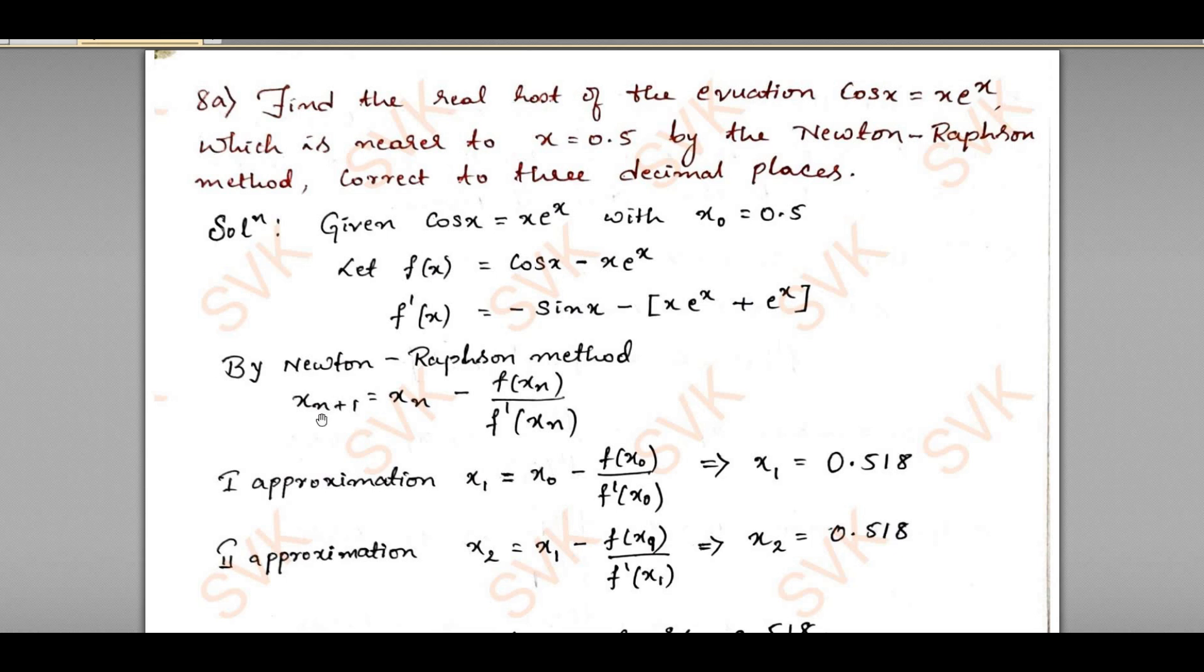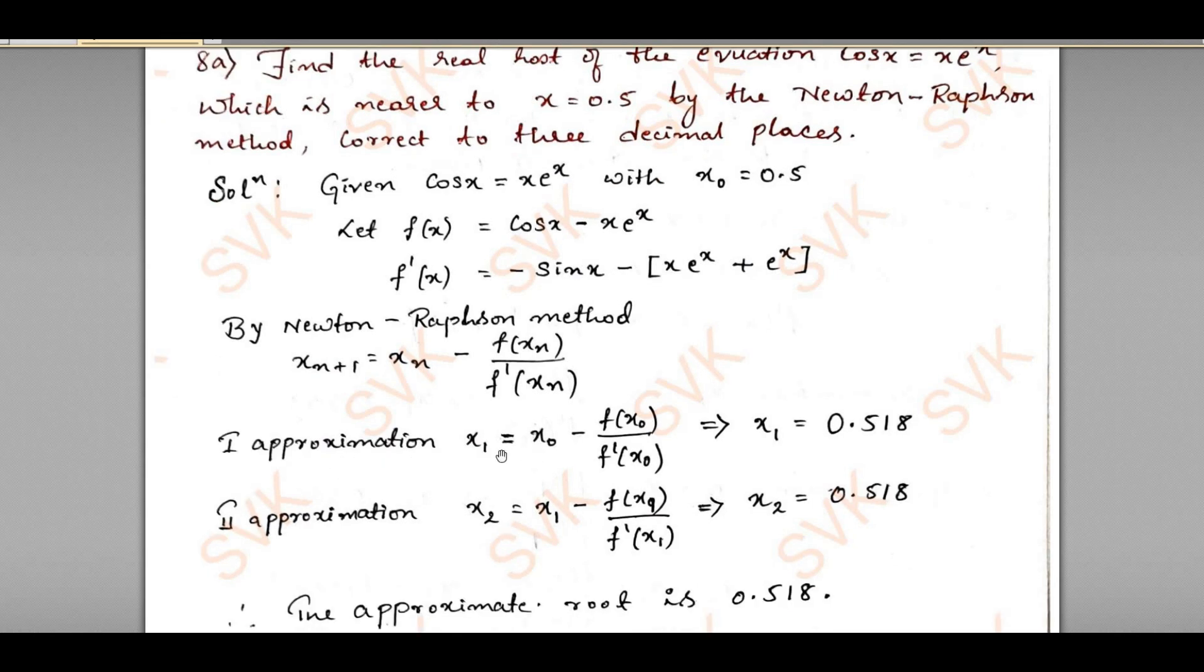By Newton-Raphson method, we have a standard formula: x_{n+1} equal to x_n minus f(x_n) divided by f'(x_n). I am going to find out the approximate solution. Then by first approximation, I will put n equal to 0, so x₁ equals x₀ minus f(x₀) divided by f'(x₀). By substituting all the values, I am going to get x₁ equal to 0.518.